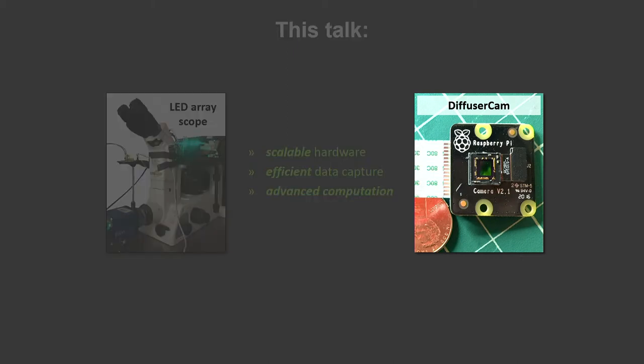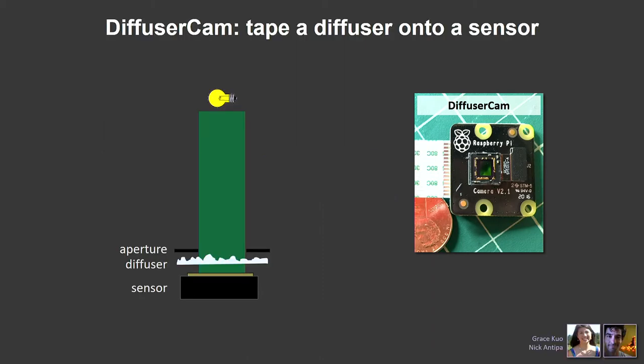The first example is Diffuser Cam. It's literally a diffuser — a bumpy piece of glass, or really plastic — like the stuff you put on windows for a privacy screen. You cut it up and put it on top of a sensor, and that's your whole camera. Obviously very cheap. We can build them on Raspberry Pis. It's a scattering element placed at a specific distance from the sensor. Grace and Nick work on this with a team of undergrads.